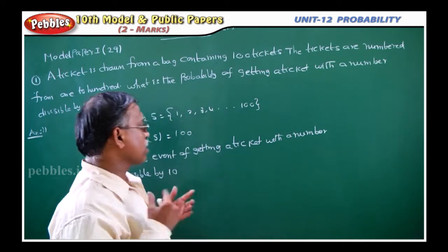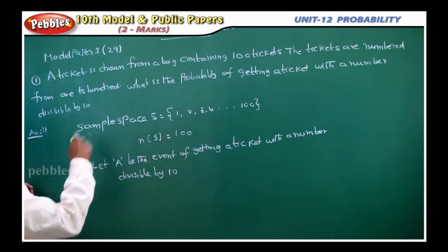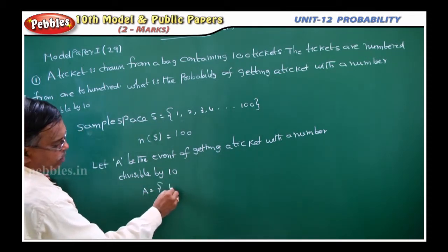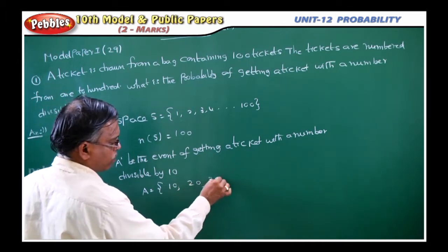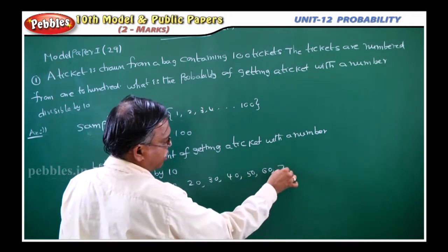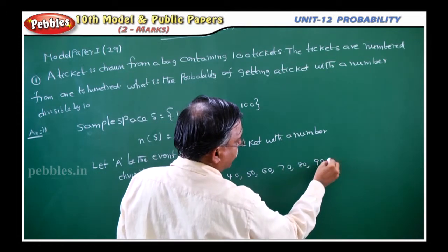Those are the number of favorable events. These are total number of events. So, what is A here? 10, because 10 is divisible by 10, 20, 30, 40, 50, 60, 70, 80, 90, 100.